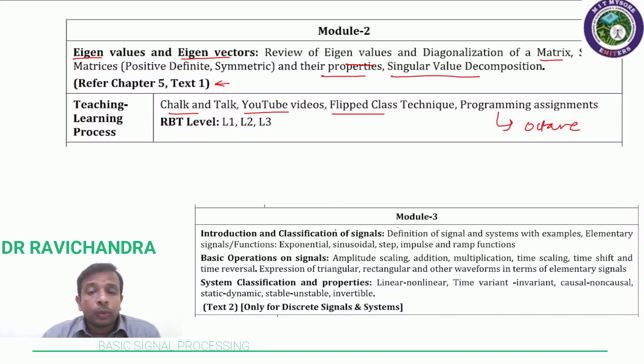Module 3 introduces signals, which is an interesting part of any engineering course. We cover signal and system definitions with examples, elementary signals like various types—unit ramp, impulse, exponential, sinusoidal, step, impulse and ramp functions—and their operations: amplitude scaling, addition, multiplication, time scaling, time shift, and time reversal. We'll express triangular, rectangular and other waveforms in terms of elementary signals. For systems, we'll study different types: linear, nonlinear, time variant, time invariant, causal, non-causal, static, dynamic, stable, unstable, and invertible systems.